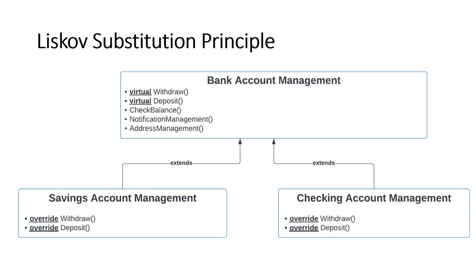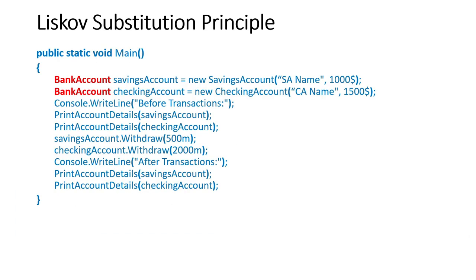Looking at the code snippet, bank account is highlighted in red to illustrate the Liskov Substitution Principle — child classes must be substitutable for their base classes. Instances of savings account and checking account are created using the base class type. When calling withdraw on them, even though they're typed as bank account, they actually use the overridden functionality from the savings and checking account withdraw methods. Hopefully this explains the Liskov Substitution Principle.